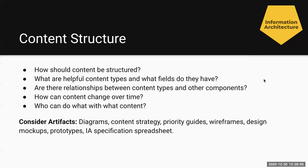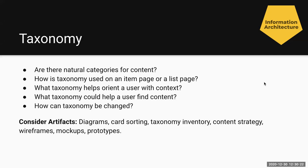Who can do what with what content, and how is content utilized? There are a few artifacts you can create to help define content structure: diagrams, a content strategy, priority guides, wireframing, design mock-ups, prototypes, and an information architecture specification spreadsheet. Not comprehensive, but these are just some ideas of how to define content structure.